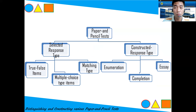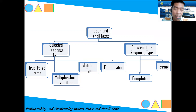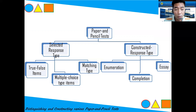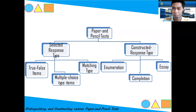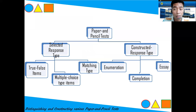Under selected response type, we have true-false items — where there are only two choices — multiple choice items, which can start from three choices though we are used to four, and matching type, where you match column A to column B.